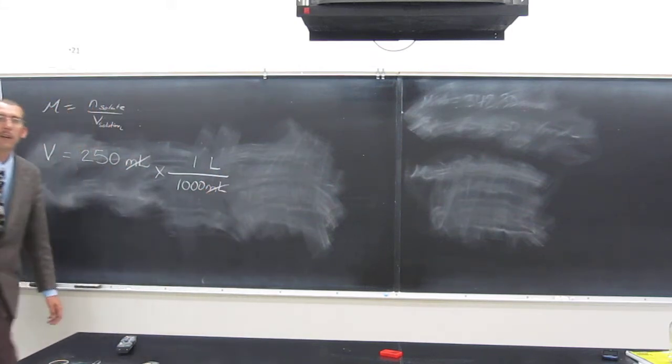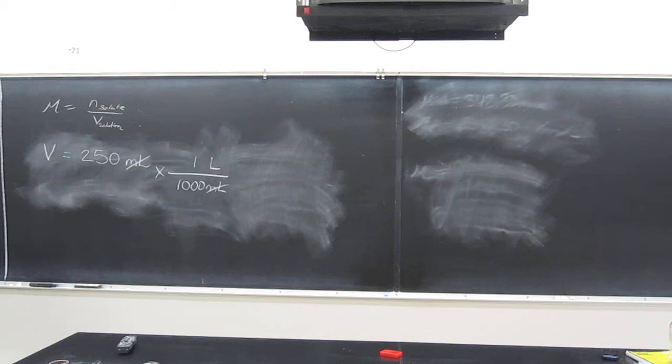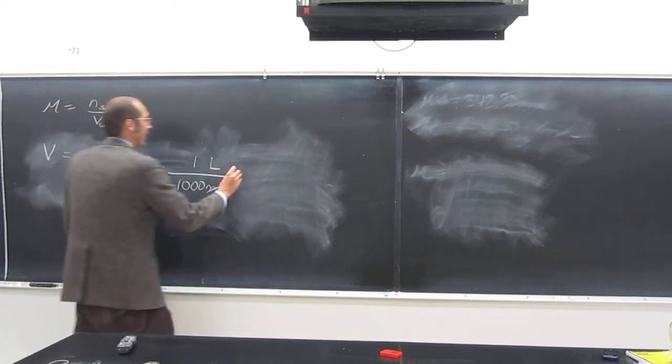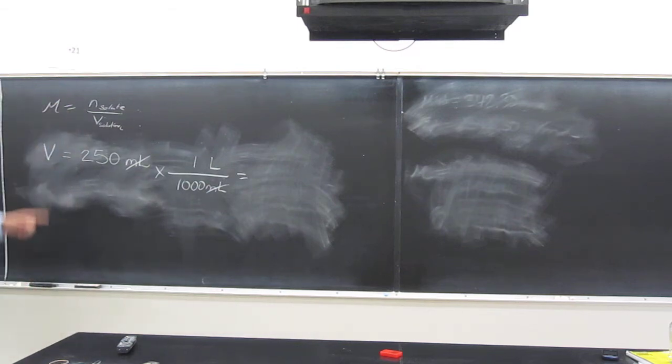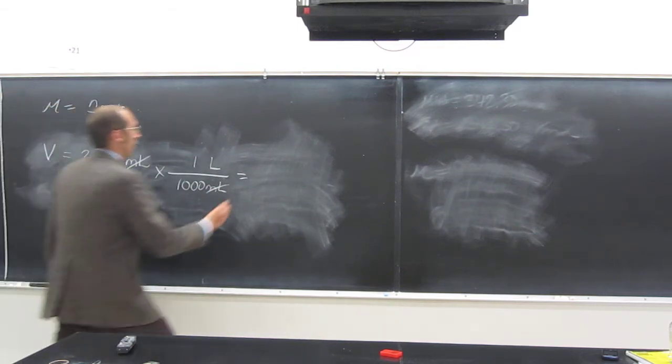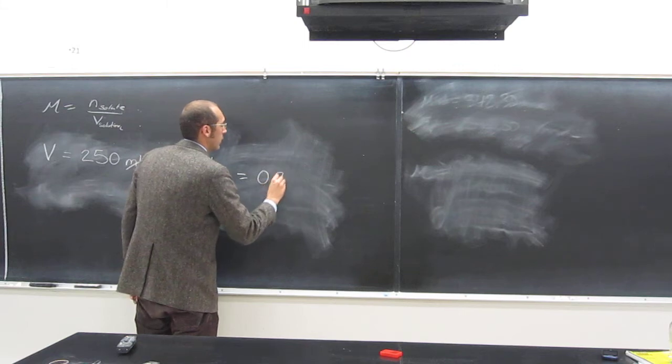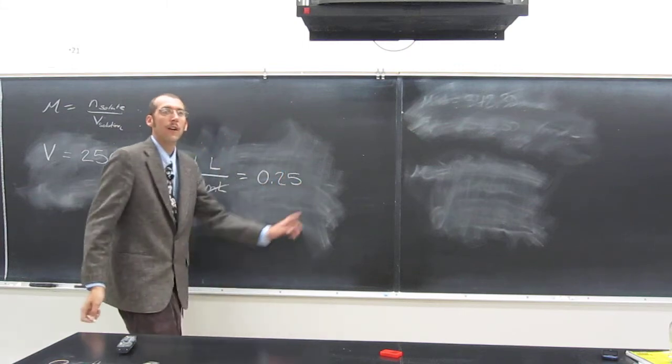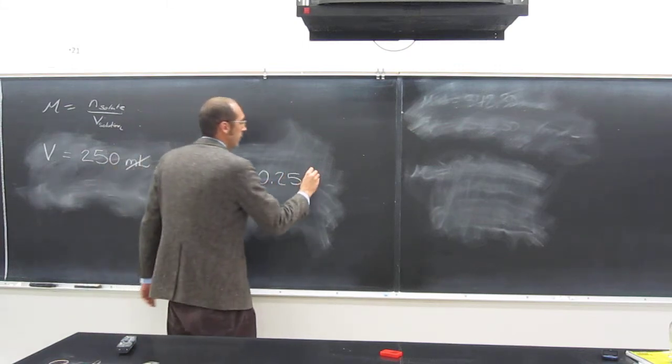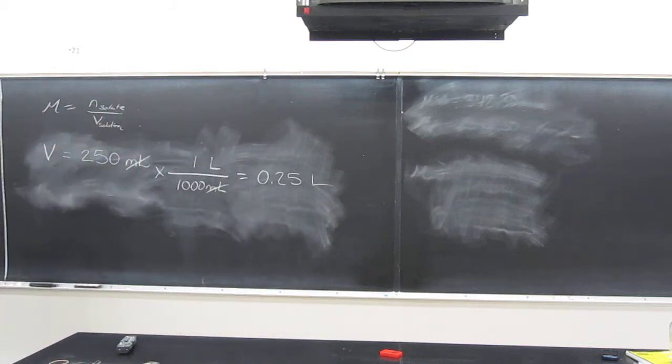Why? Why are the milliliters on the bottom? Because we want to cancel them out, right? And we want to get liters. Makes sense now? What's that number? 0.25 liters. You don't have to put that zero there, okay? So, very good.